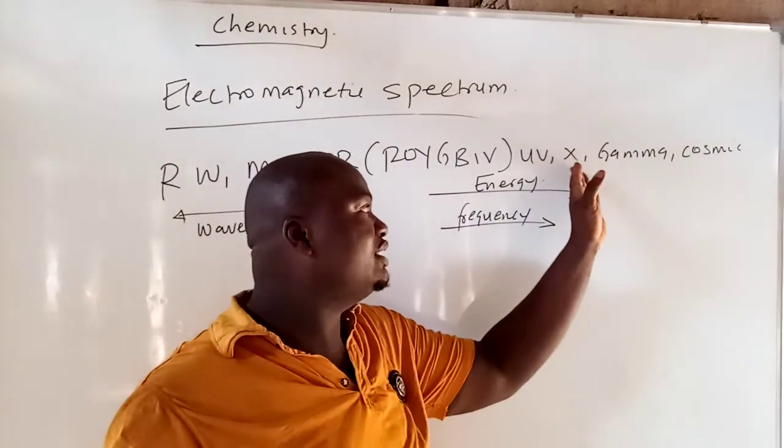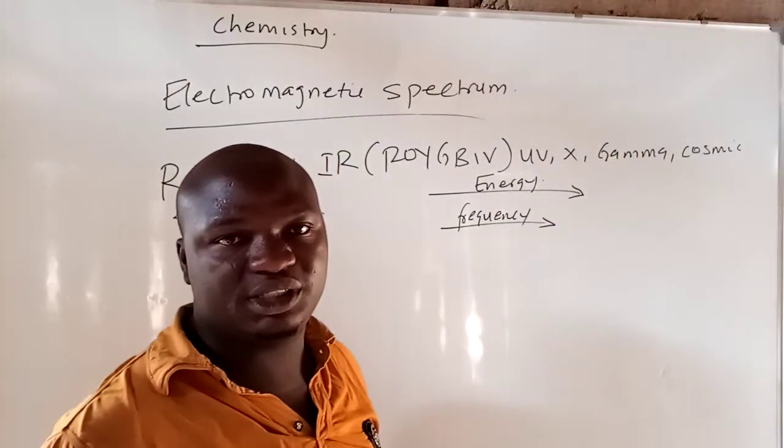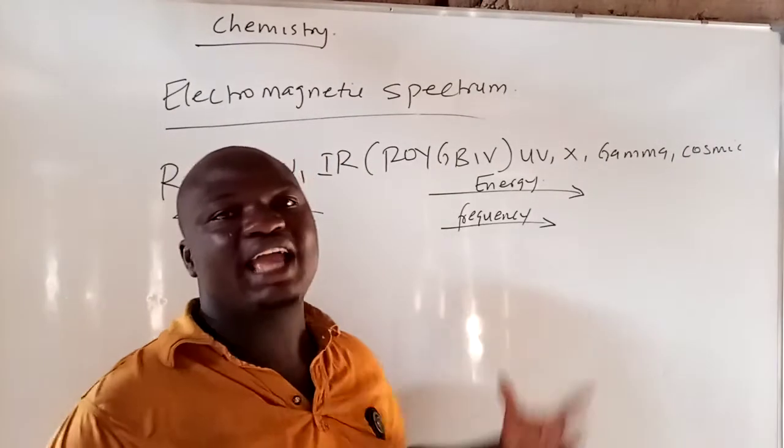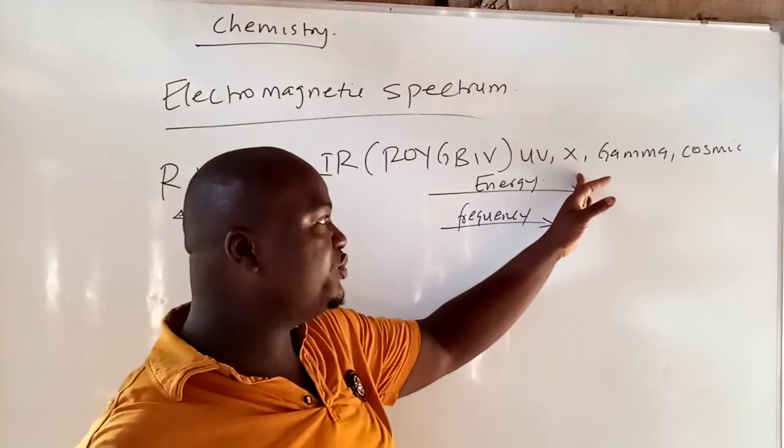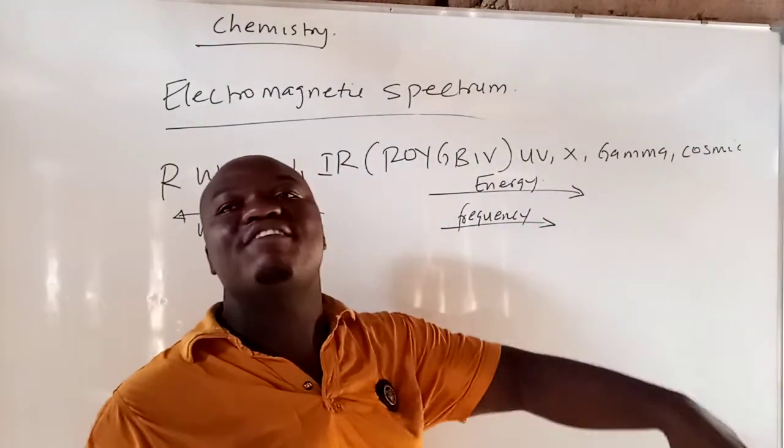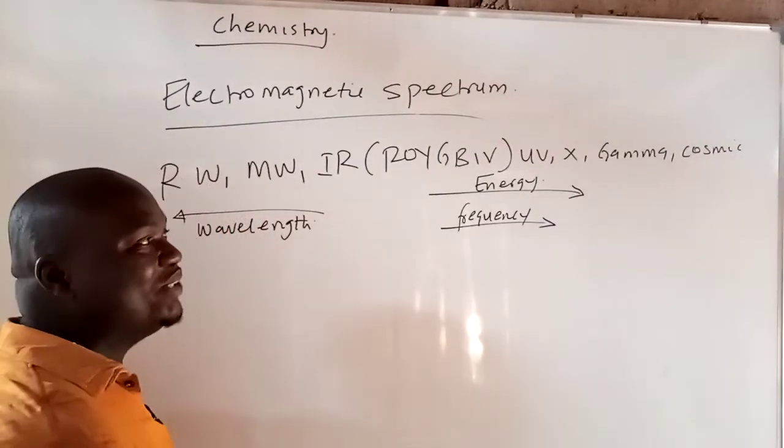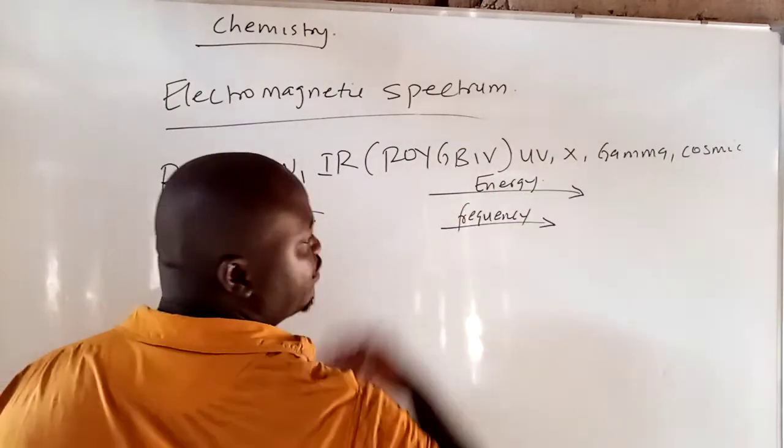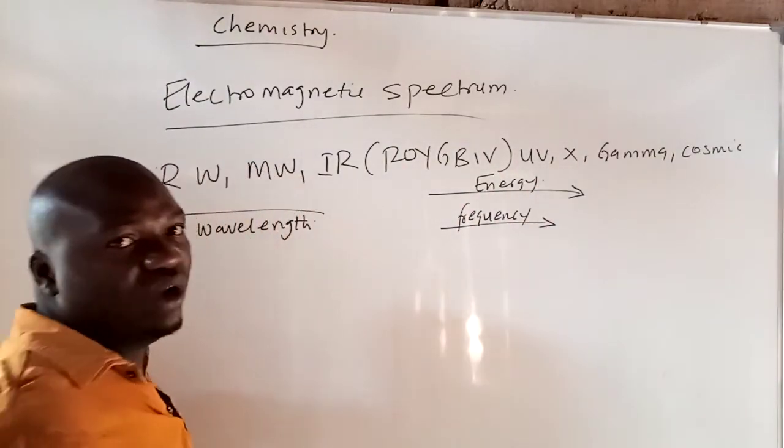So between gamma rays and X-ray, which one have the highest frequency? Of course, it's gamma rays. Gamma rays have the highest frequency. Gamma rays have the highest energy. Now, look at it. Between X-ray and gamma rays, which one have the highest wavelength? You can see that it's X-ray. Because wavelength increases towards the left. So you can see it's X-ray have the highest wavelength.